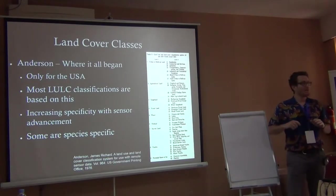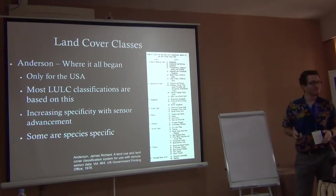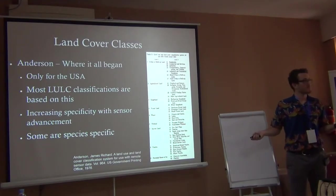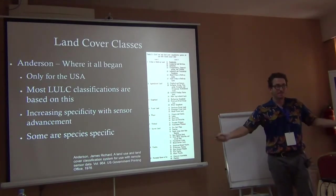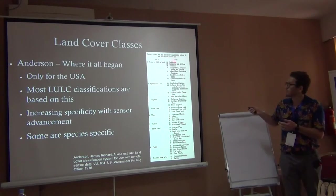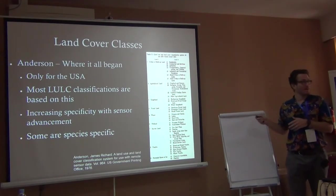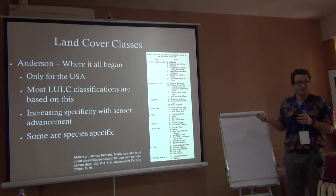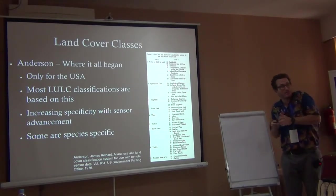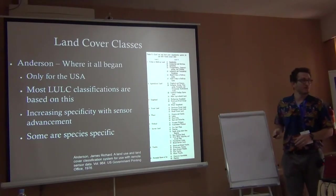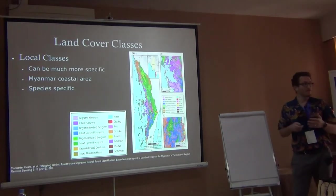The Anderson Classification System from the 1970s by the USGS created these standardized land classes: urban, agricultural, rangeland, forest, water, wetland, barren, tundra, and snow — each with more detailed subtypes within them. This is kind of where it started, and land cover classification has more or less maintained this structure, though some people take it further and get more detailed. Most land use and land cover classifications are based on this system.